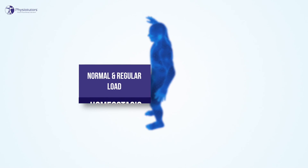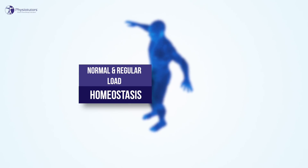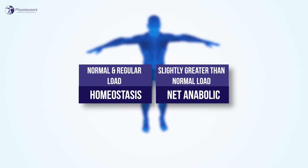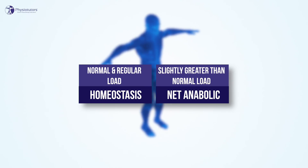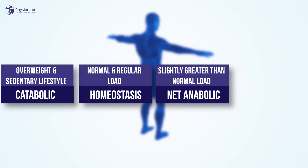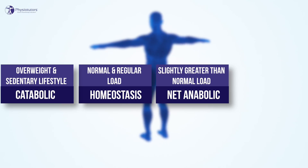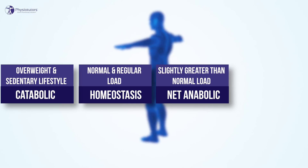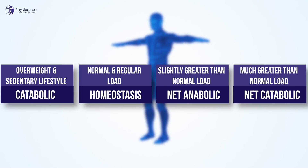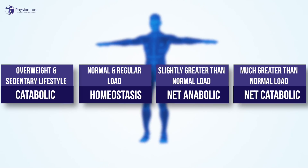Generally speaking, tendons that experience normal and regular load are in a state of homeostasis. Slightly greater than normal load will lead to a net anabolic biological response, which results in increased tensile strength. Conditions such as being overweight require more load-bearing capacity, and a sedentary lifestyle may induce catabolic biological responses, thus reducing the tensile strength of the tendons. On the other hand, loads that are much greater than normal hinder the tendon from adapting appropriately and can lead to the development of tendinopathy.